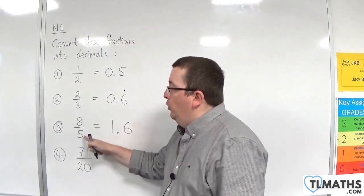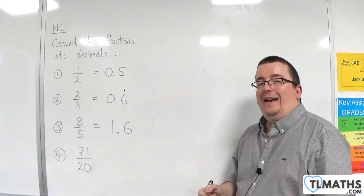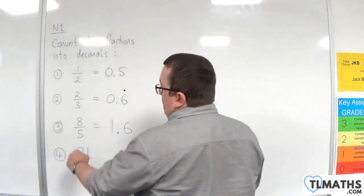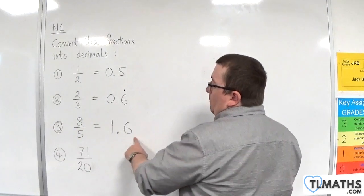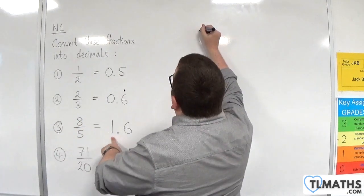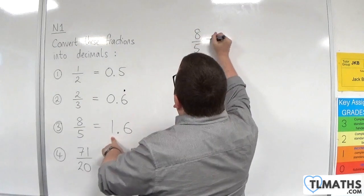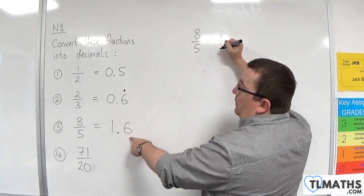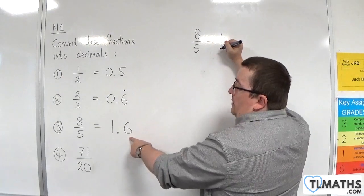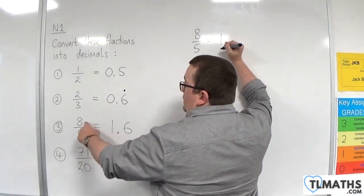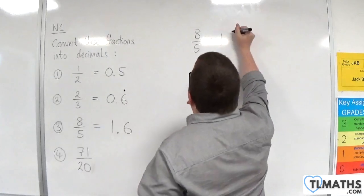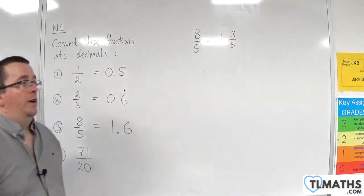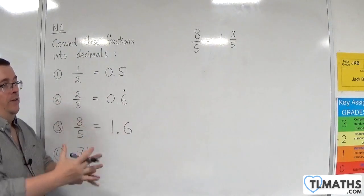So, you could write 8 fifths as a mixed number, as we saw in the previous video. So, because you've got 8 divided by 5, you get 1.6, you know it is going to be 1. So, let's write 8 fifths as 1. And how many fifths have we got left over? Well, we've got 3, because 5 goes into 8 once, with 3 left over. So, 8 fifths is the same as 1 and 3 fifths.